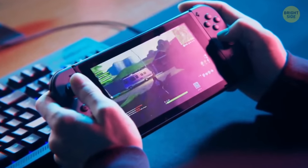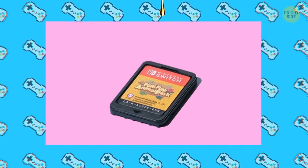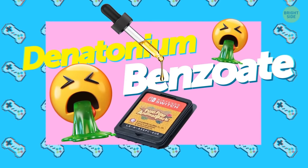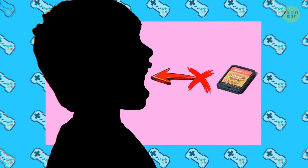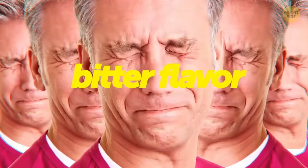Nintendo Switch cartridges have a hidden safety function, and it's going to leave a bad taste in your mouth. Although non-toxic, denotonium benzoate coats the cartridge in a sour, peppery and bitter substance to prevent kiddos from swallowing them. This chemical compound is one of the most bitter flavors known to humanity, commonly used to keep people from consuming things they're not meant to.